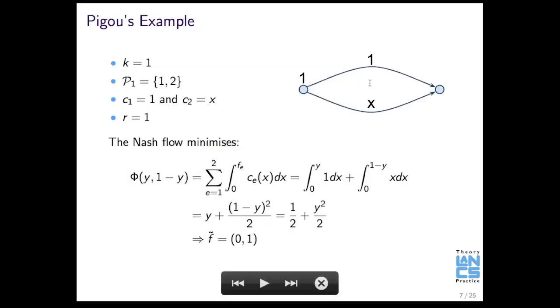So, just revisiting Pigou's example, the exact same example, we can calculate this optimal function, which was the previous function on the previous slide, and we get this function here for this particular example, and that is optimized by 0, 1, which is the Nash flow. So, what that means is that we can turn a game theoretical problem into an optimization problem, and vice versa. So, that becomes very handy later on.